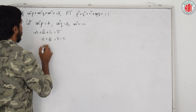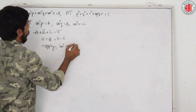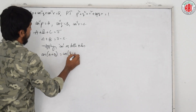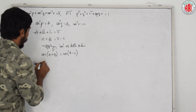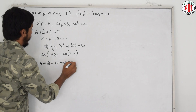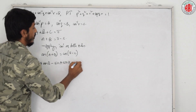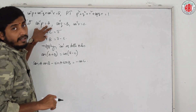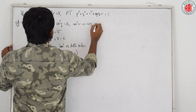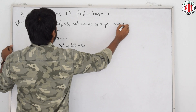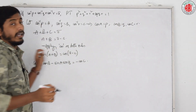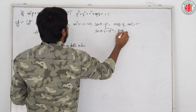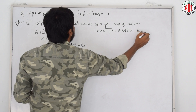Since everything is in terms of cosine, let us apply cos on both sides. That gives cos of A plus B equals cos of pi minus C. Now cos A is p, cos B is q, cos C is r. If cos A is p, then sin A is under root 1 minus p square, sin B is under root 1 minus q square, and sin C is under root 1 minus r square.